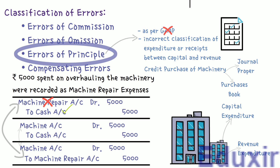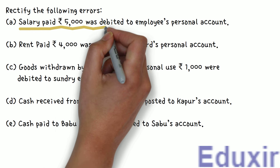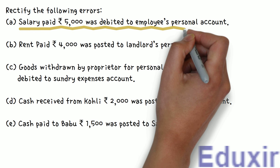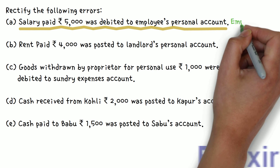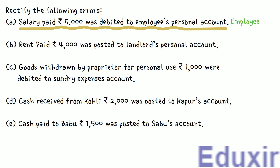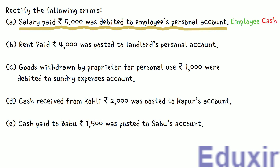Now, with this information at our disposal, let us proceed with the analysis of each error in the given problem. Starting with the first error: Rs. 5,000 of salary paid to the employee was debited to the employee's personal account. The effect of the wrong entry is to debit the employee's personal account; and assuming payment is in cash, the cash account is credited. As you can see from the recap, this is an error of principle.